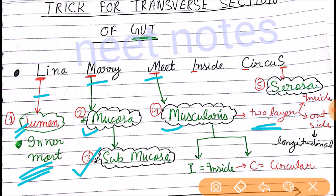Now, how will you remember which one is inner and which one is outer? For that, I have made I for inside, and from circus we'll take C for circular.